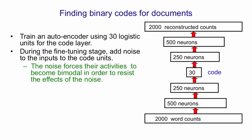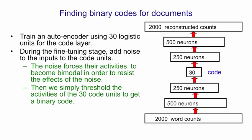In order to be resistant to that noise, the code units need to be either firmly on or firmly off. So the noise will encourage the learning to avoid the middle region of the logistic, where it conveys a lot of information but is very sensitive to noise in its inputs. At test time, we simply threshold the logistic units in the middle layer to get binary values. So if we can train an autoencoder like this, we will be able to convert the counts for a bag of words into a small number of binary values — in other words, we'll have learned a set of binary features that are good for reconstructing the bag of words.